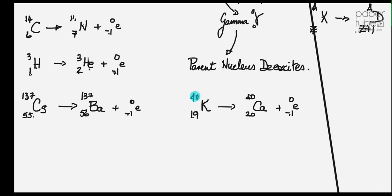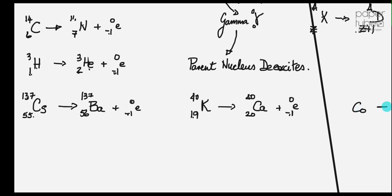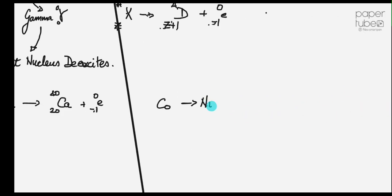Let's do the next one. Cobalt goes to nickel plus a beta particle. So what numbers does it give me? It gives me that as 60 and it gives me that as 28. So the cobalt, 28 take away 1 must be 27. These numbers add up to give you these numbers, and that must be 60.